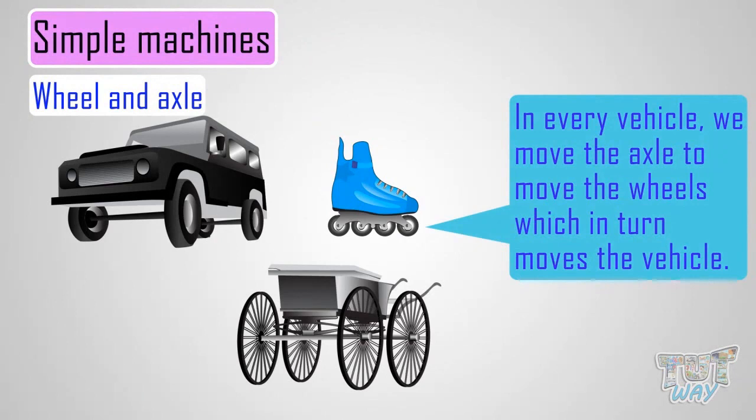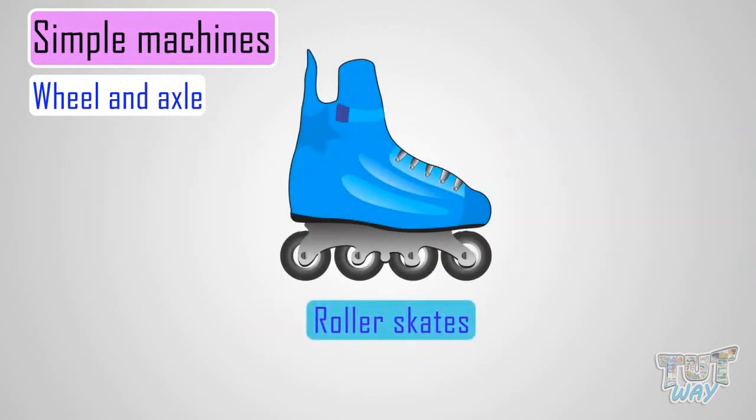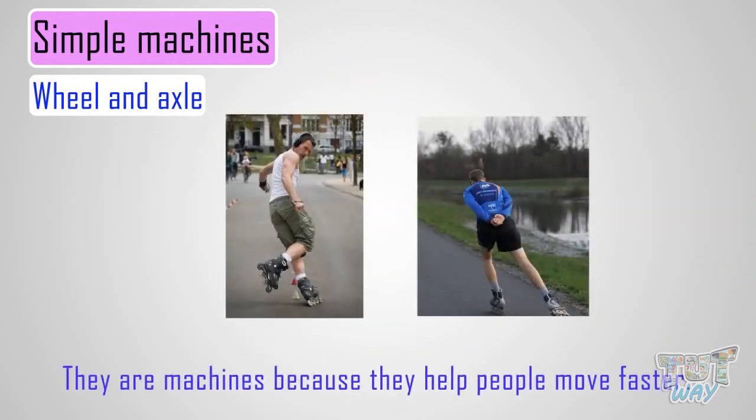Let's see some examples. Roller skates are made up of many wheels and axles. They are machines because they help people move faster. You can find a wheel and axle used almost everywhere.